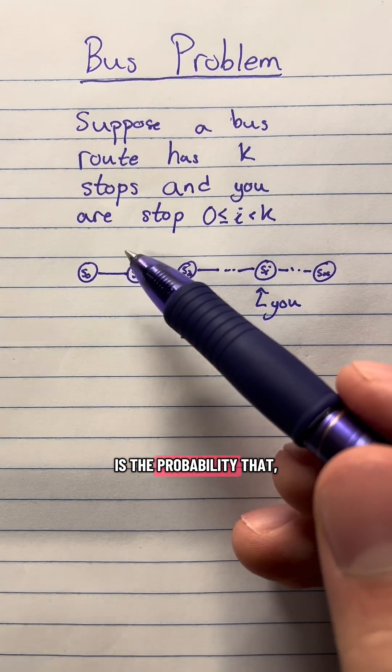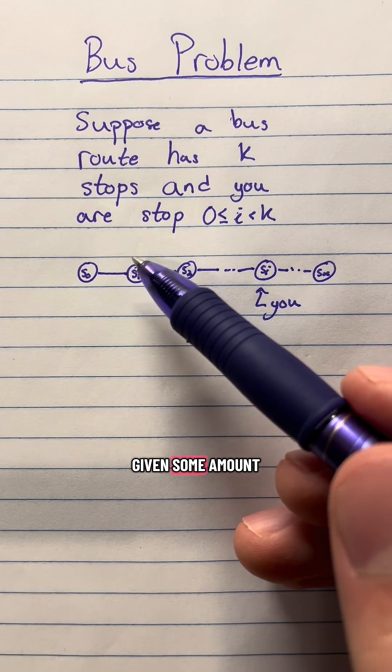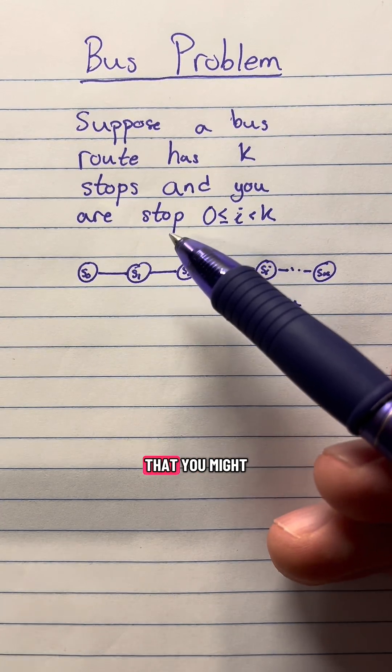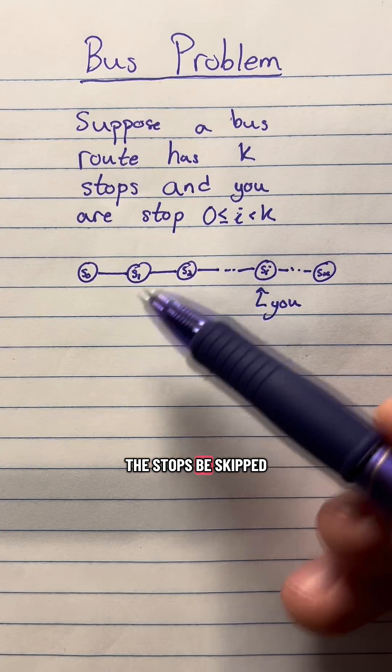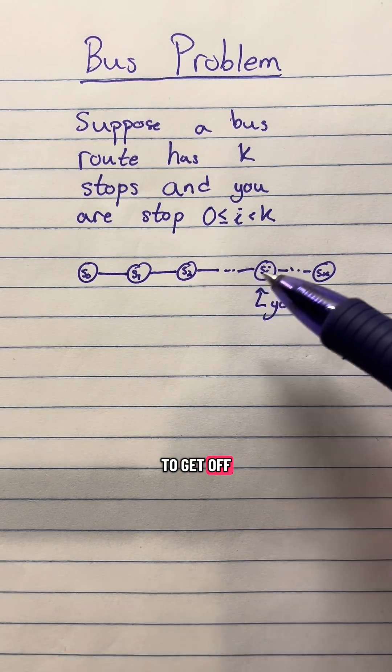So I wanted to know what is the probability that given some amount of people on the bus, you might have one of the stops be skipped because nobody needs to get off at that stop.